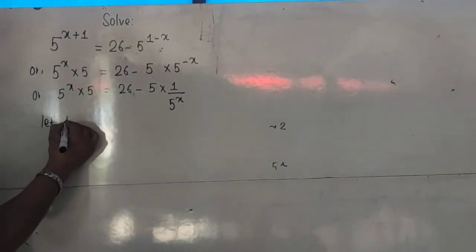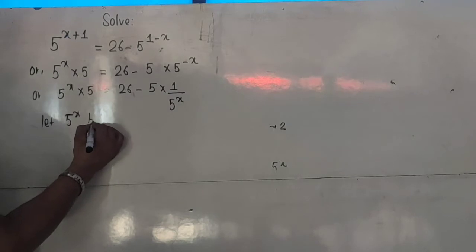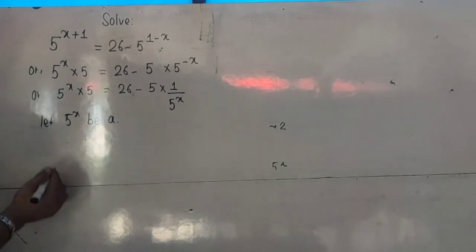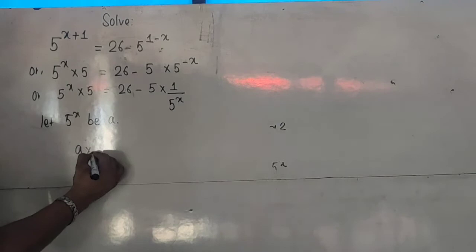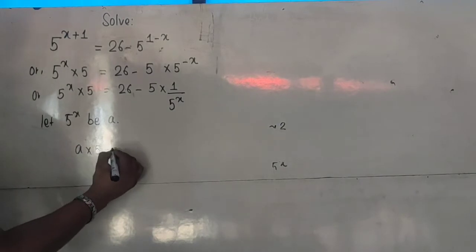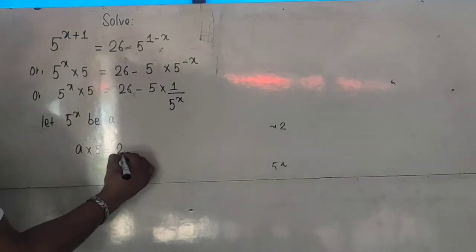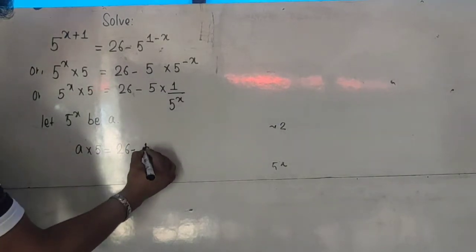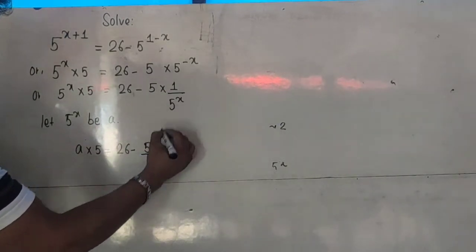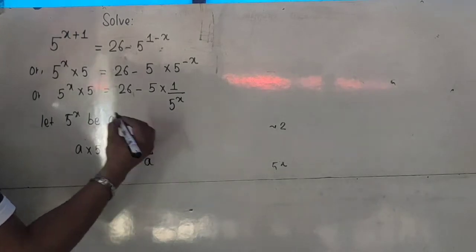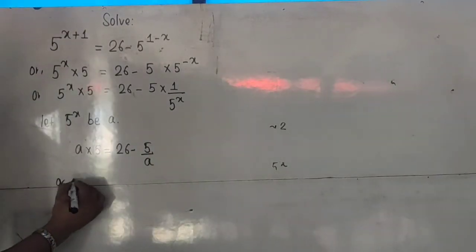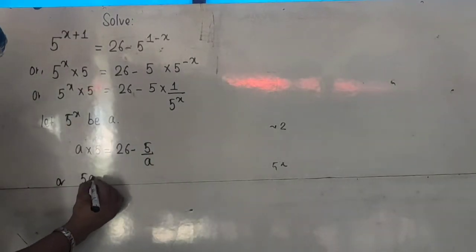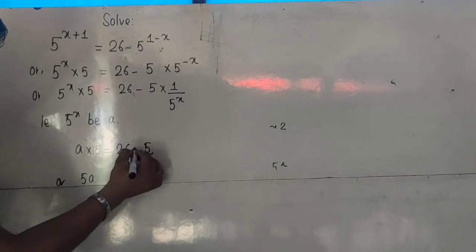Now I suppose 5^x to be a variable — let a equal 5^x. So I replace 5^x with a everywhere. We have 5 times a on the left, which gives 5a, equals 26 minus 5 times (1/a), which is 5 over a.